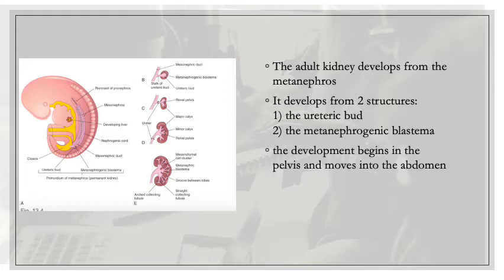The bud slowly elongates and penetrates into the metanephrogenic blastema, which is a mass of cells that will eventually form the nephron. The stalk of the ureteric bud becomes the ureter, while the superior part branches multiple times. These branches develop into the collecting tubules of the kidney and help create the major and minor calyces and other parts of the metanephron.